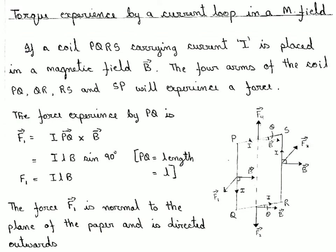In the last lecture we learned that when a current-carrying conductor is placed inside a magnetic field, that conductor will experience a force given by F = IL cross B, where IL is the current element and B is the magnetic field.